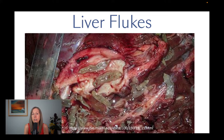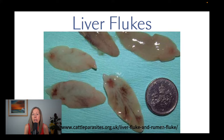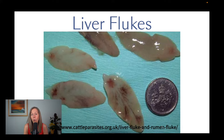Here are more liver flukes. You can see they're a little bit oval shaped, smaller than the intestinal flukes, kind of rubbery, oval shaped, creamy colored, and translucent. You can almost see a little bit of the intestines in one of them — the two lines or veins. That gives you an idea of what they look like.